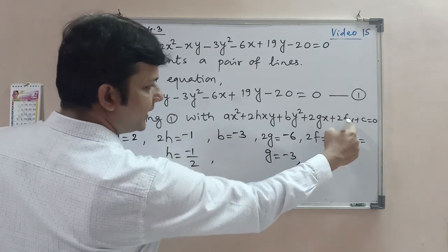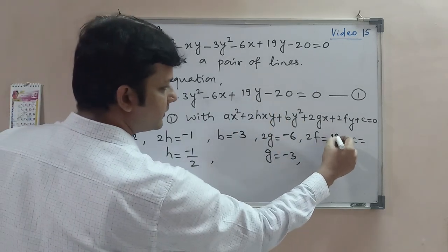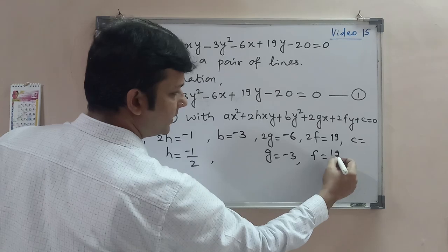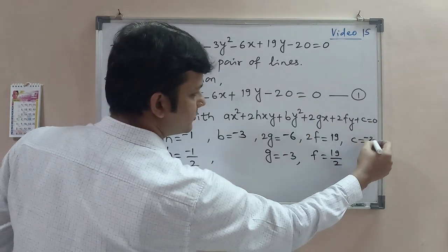2f, which is y's coefficient, is 19, so f will be 19/2. The constant c is -20.